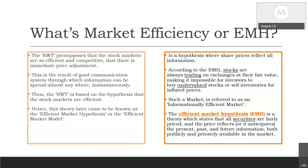According to the Efficient Market Hypothesis, stocks are always trading on exchanges at their fair value. Advocates of EMH hold that the current price is always the right price, making it impossible for investors to buy undervalued stocks or sell their holdings at an inflated price. Such a market is referred to as an informationally efficient market, a term recognized by Louis Bachelier in the early 1900s. It took almost 60 years to confirm that stock prices move randomly.